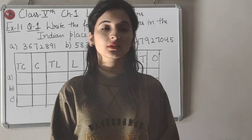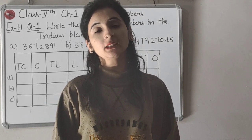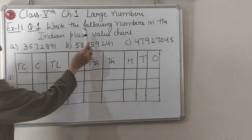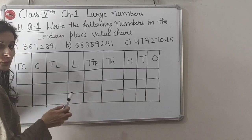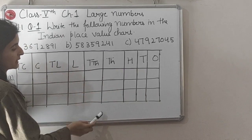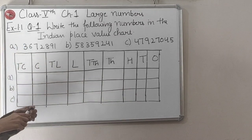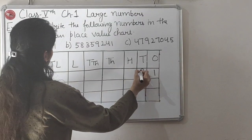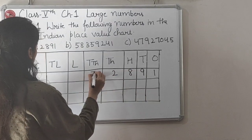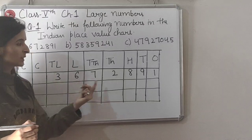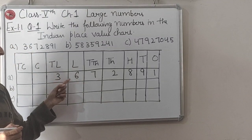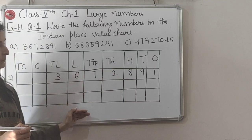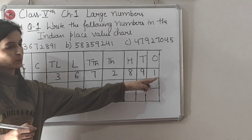Hello students. Today we are going to start with Exercise 1.1 of Chapter 1, Large Numbers. The first question is: write the following numbers in the Indian place value chart. We have to arrange the given numbers into the Indian place value chart. We start writing from the ones place, going right to left: 1, 9, 8, 2, 7, 6, 3. This number is in the lakhs period, so we read it as 36,07,2891.